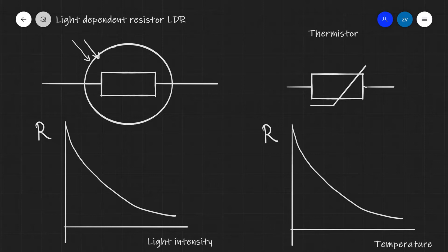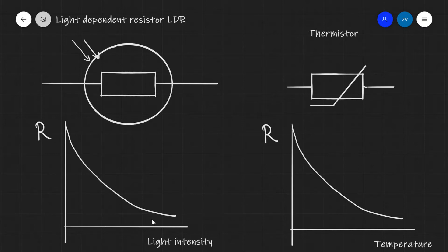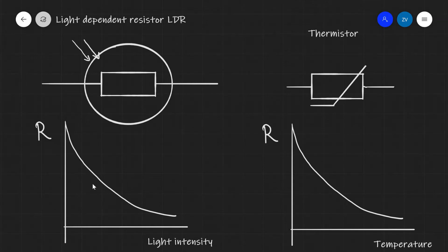Now that we've looked at the most common equations of potential dividers, let's have a look into LDRs — the light-dependent resistors — and thermistors. A light-dependent resistor is very often used in potential divider circuits. This is the symbol of an LDR, and this over here on the right is the symbol for a thermistor. There are two very important graphs to remember. The resistance of an LDR decreases as light intensity increases. Very similarly, the resistance of a thermistor decreases as temperature increases. A good rule of thumb is that if the temperature is going up, the resistance of the thermistor is doing the opposite, and if the light intensity is going up, the resistance of the LDR is doing the opposite.